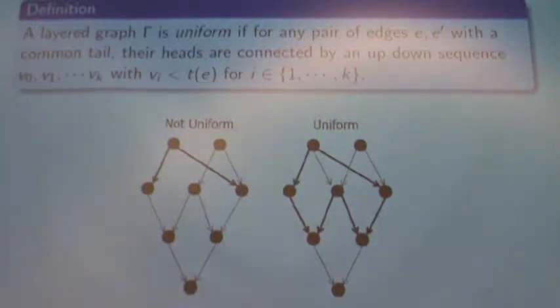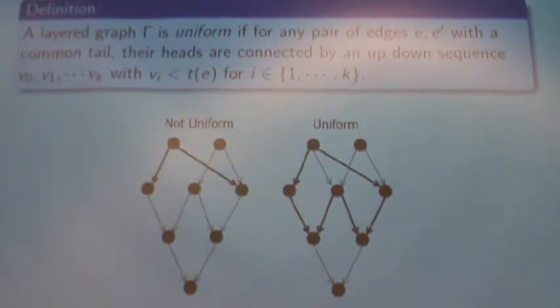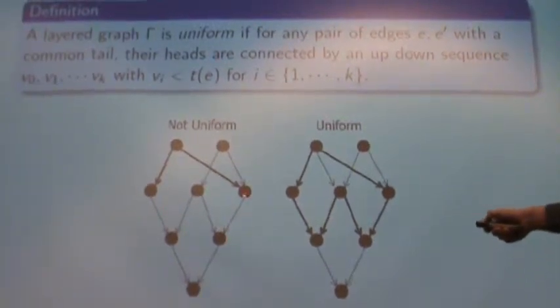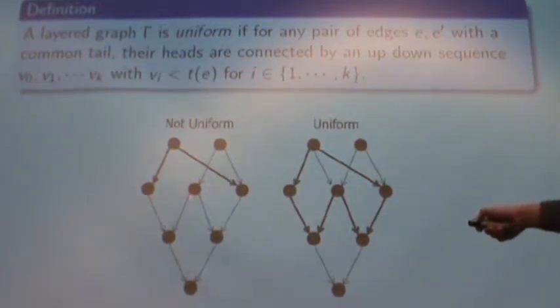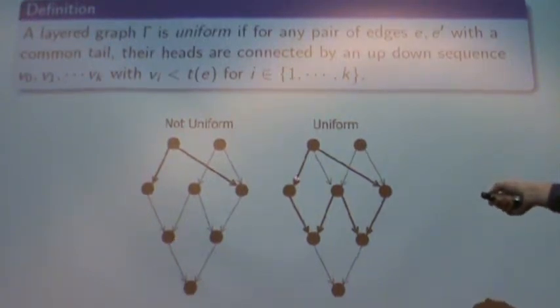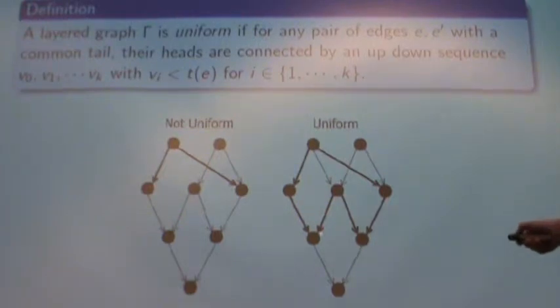The reason we want that definition is for the definition of a uniform graph, which is going to be important because we're dealing with a class of algebras based on graphs, and those graphs need to be uniform in order for those algebras to be quadratic. A layered graph is uniform if, for any pair of edges with a common tail, their heads are connected by an up-down sequence that lies below that common tail. In the non-uniform example shown, the heads are connected by an up-down sequence but not below that common tail, so it's not uniform.